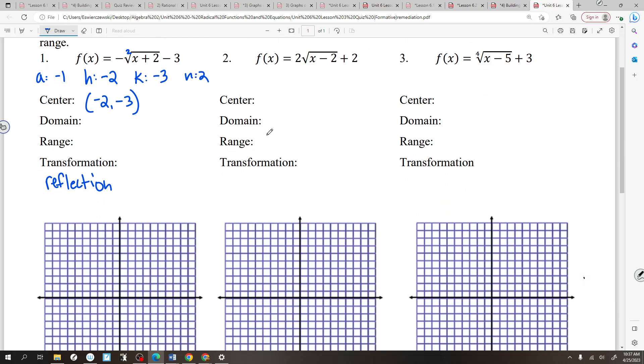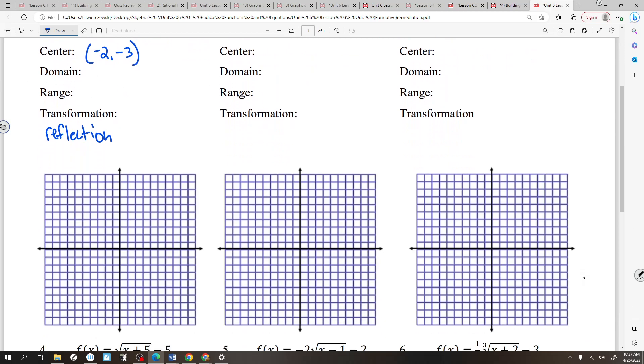Center would be at negative 2 comma negative 3 because the center is always at H comma K. So let's graph this and then we will talk about domain and range. Negative 2, negative 3 is right here. And then it's reflected. So it's going to look like that.